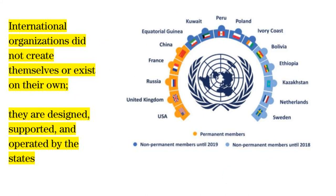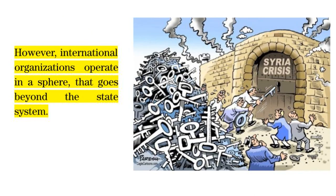In summary to this introductory lecture, it is important to remind ourselves that international organizations did not create themselves or exist on their own. They were designed, supported, and operated by the countries that created them. However, international organizations, from the United Nations down to voluntary organizations with members in just a few countries, operate in a sphere that goes beyond the state system. This does not mean that international organizations are necessarily more powerful or more important than states — certainly political realists do not see them that way.